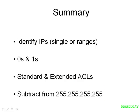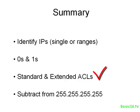Let's summarize what we covered. A wildcard mask is used to identify IPs, whether it's a single IP address or a range like a subnet. A wildcard mask uses 1s and 0s: a 0 means that the value in the IP address has to match — those bits have to match — while a 1 means that the corresponding bits do not have to match. Wildcard masks are used in both standard and extended access lists. To convert between a wildcard mask and a subnet mask, subtract either value from 255.255.255.255 to figure out the other.